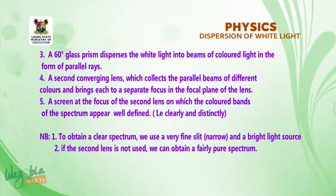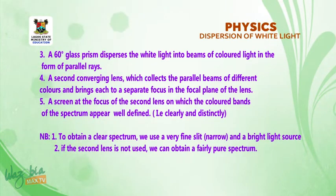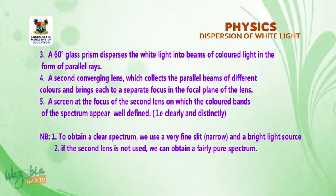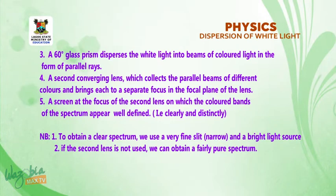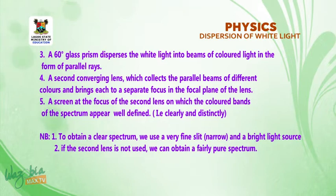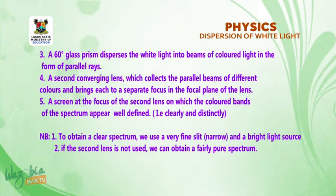Number three, a 60-degree glass prism disperses the white light into beams of colored light in the form of parallel rays. Number four, a second converging lens which collects the parallel beams of different colors and brings each to a separate focus in the focal plane of the lens. Number five, a screen at the focus of the second lens, on which the color bands of the spectrum appear well defined, that is, clearly and distinctly. Note that to obtain a clear spectrum, you will need a very fine or narrow slit and a bright light source.